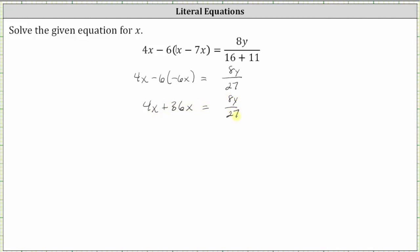So simplifying the left side, the next step is to combine like terms. Four x plus 36 x is 40 x, giving us 40 x equals eight y divided by 27.